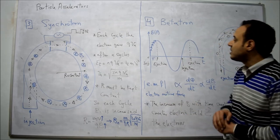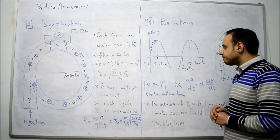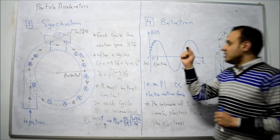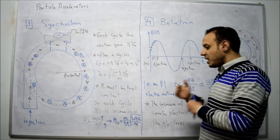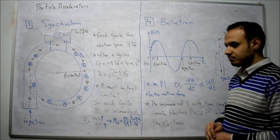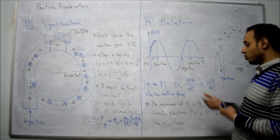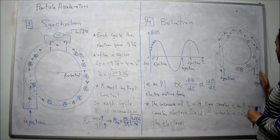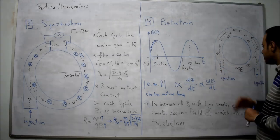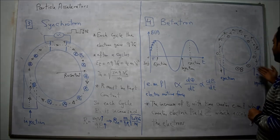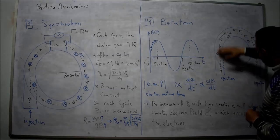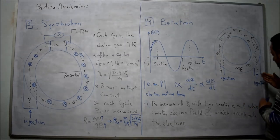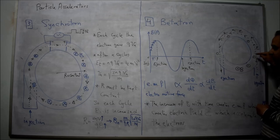The last accelerator is called the betatron. The idea in the betatron is based on the principle that the change in magnetic field over time will create an electromotive force. This EMF, being electric in nature, will create an electric field. So we have a tube with an injection inlet and ejection outlet, and inside this tube there is a magnetic field and a perpendicular electric field. When the electron is injected, it finds a perpendicular magnetic field and moves in a circle.